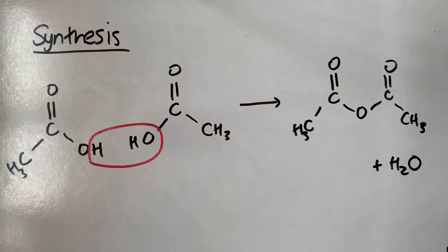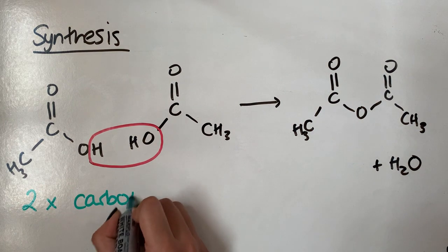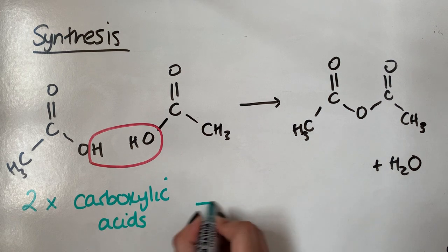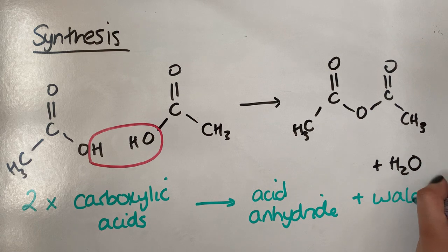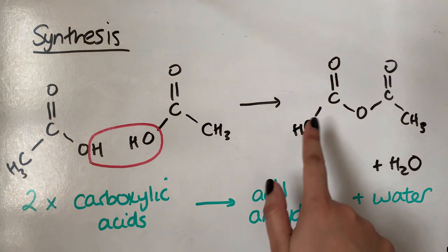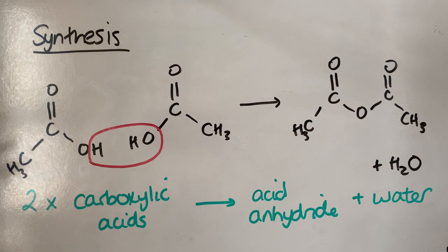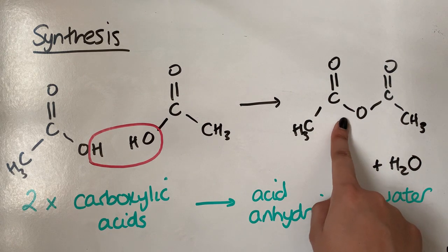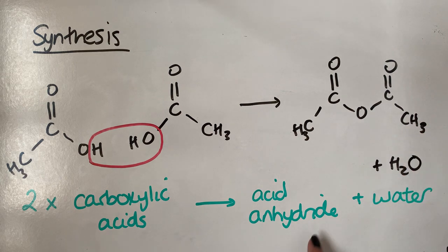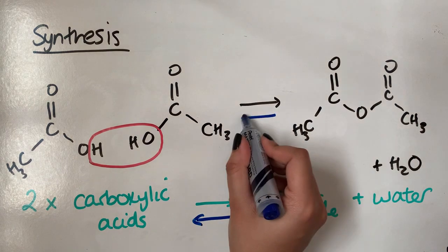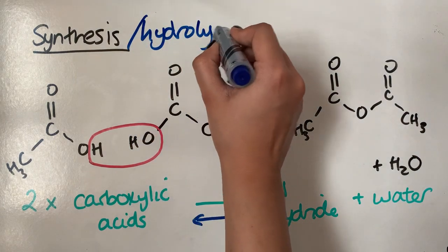A water molecule is also released. The general equation is: two lots of carboxylic acid form the acid anhydride plus water. It is the removal of water that forms the anhydride. Given that this is a carboxylic acid derivative, we can hydrolyse it to reform the parent carboxylic acid — that's just the reverse of this reaction. The forward reaction is the synthesis; the reverse reaction is the hydrolysis, because acid anhydride plus water reforms the carboxylic acid.